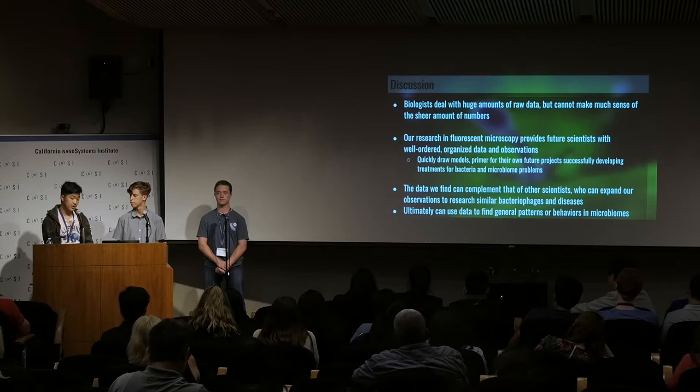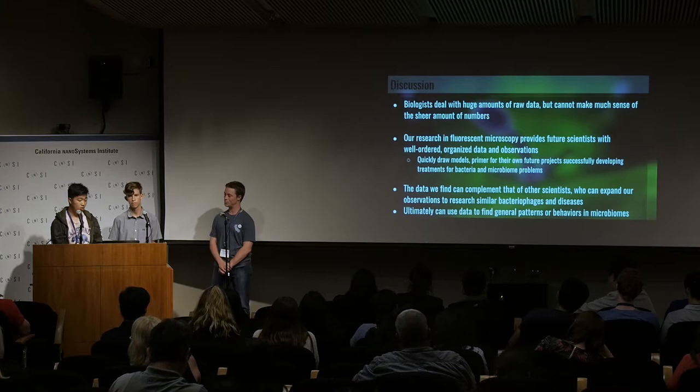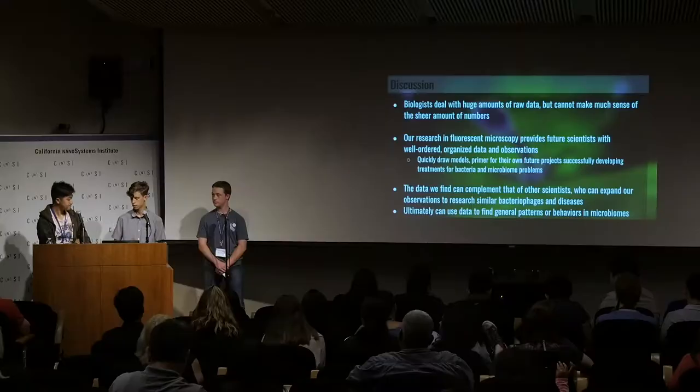Scientists can use fluorescent microscopy to quickly draw models for their own projects and use that data as a complement to whatever they're researching. They can also expand our observations to research similar bacteriophages and diseases, and possibly find treatments for them. Ultimately, we can put all this data together with other scientists — like a jigsaw puzzle — to find general patterns or behaviors in human microbiomes in general.